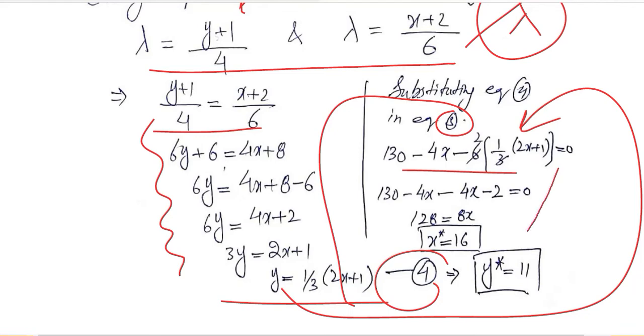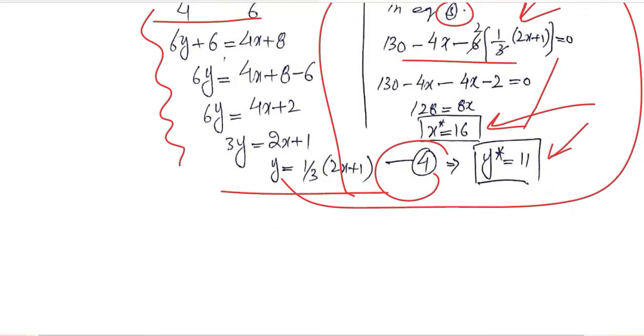Solving this is not difficult. It's simple algebra and when we solve it we get the x critical value which is in this case 16 and then we get the critical value of y which is 11. So now we have the utility maximizing values of x and y.